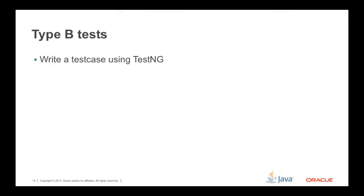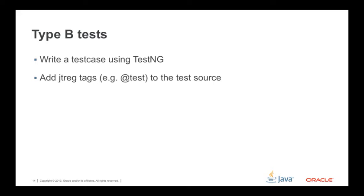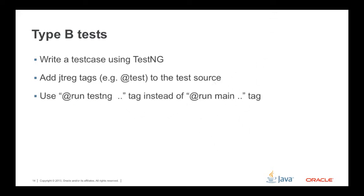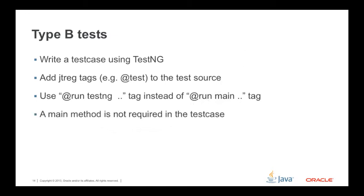Now let me show how Type B tests are supported in JTREG. Write a test case using TestNG, then add JTREG tags — for example, the @test tag — to the test source file, similar to other JTREG tests. Then use the @run TestNG tag instead of the @run MainAction tag. However, a main method is not required in the test case.